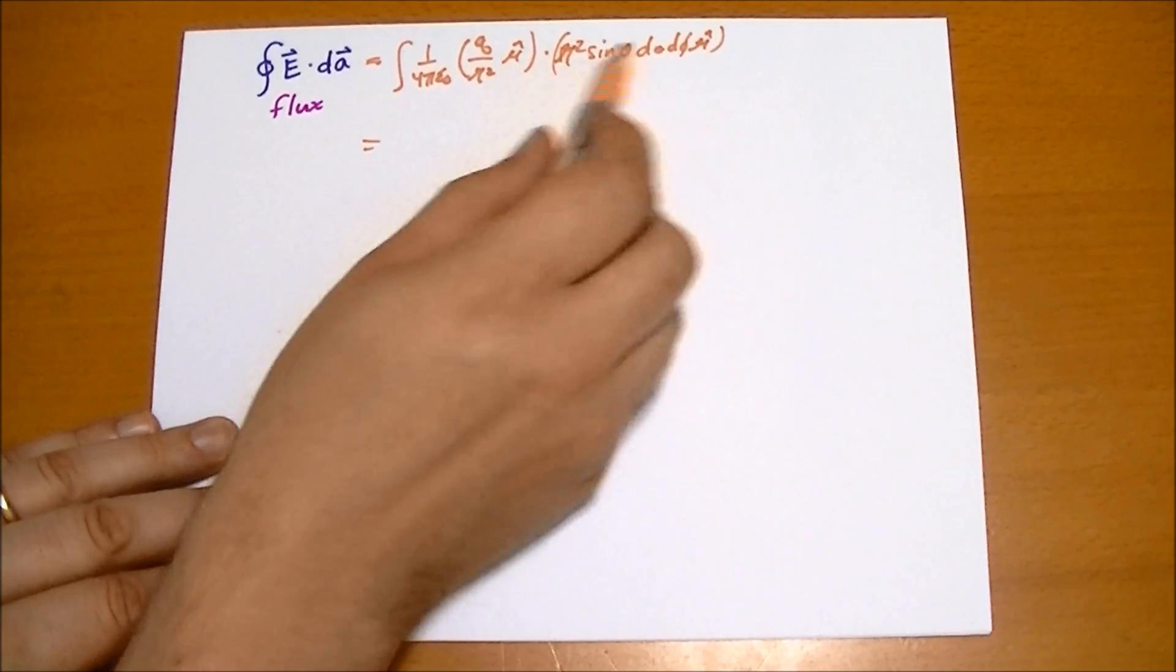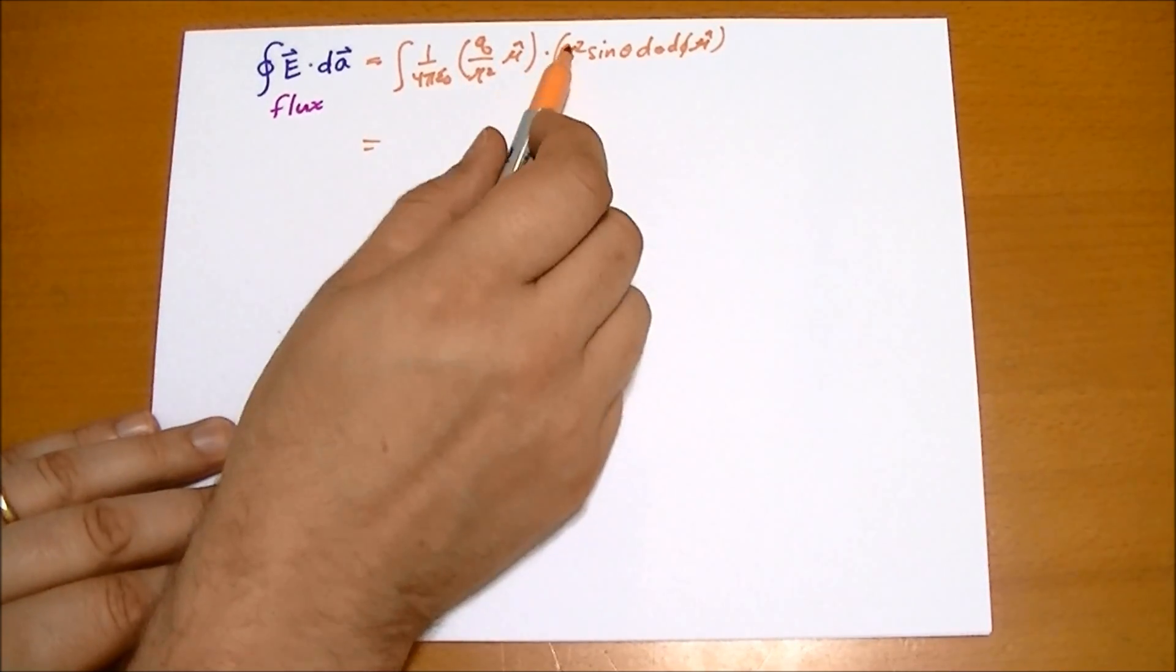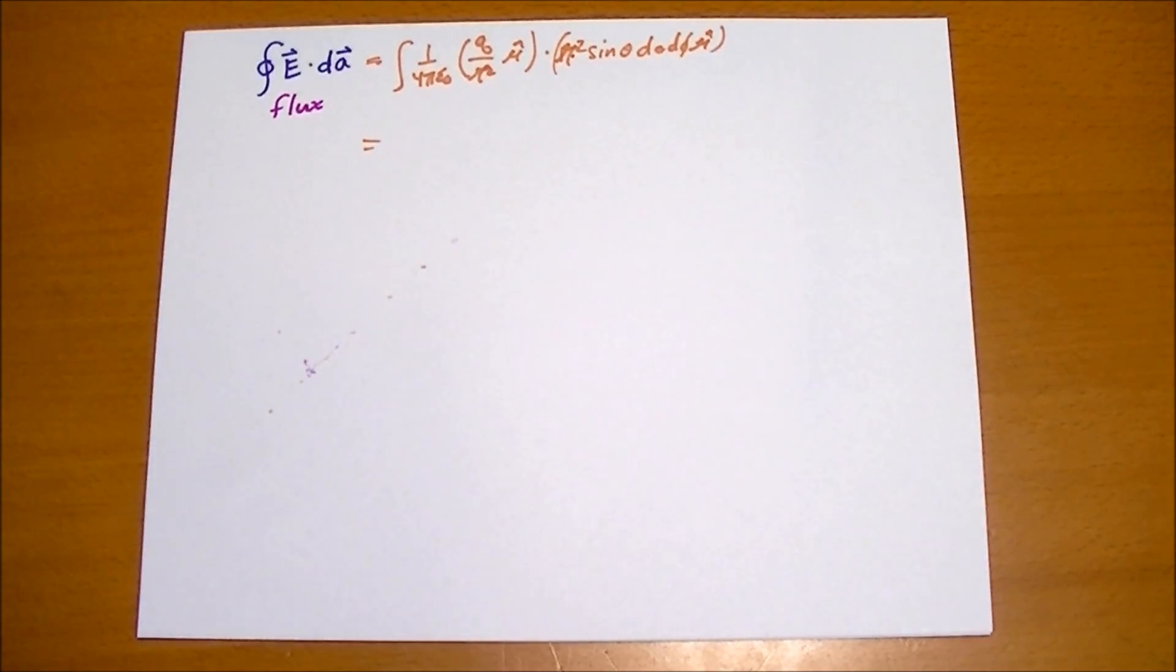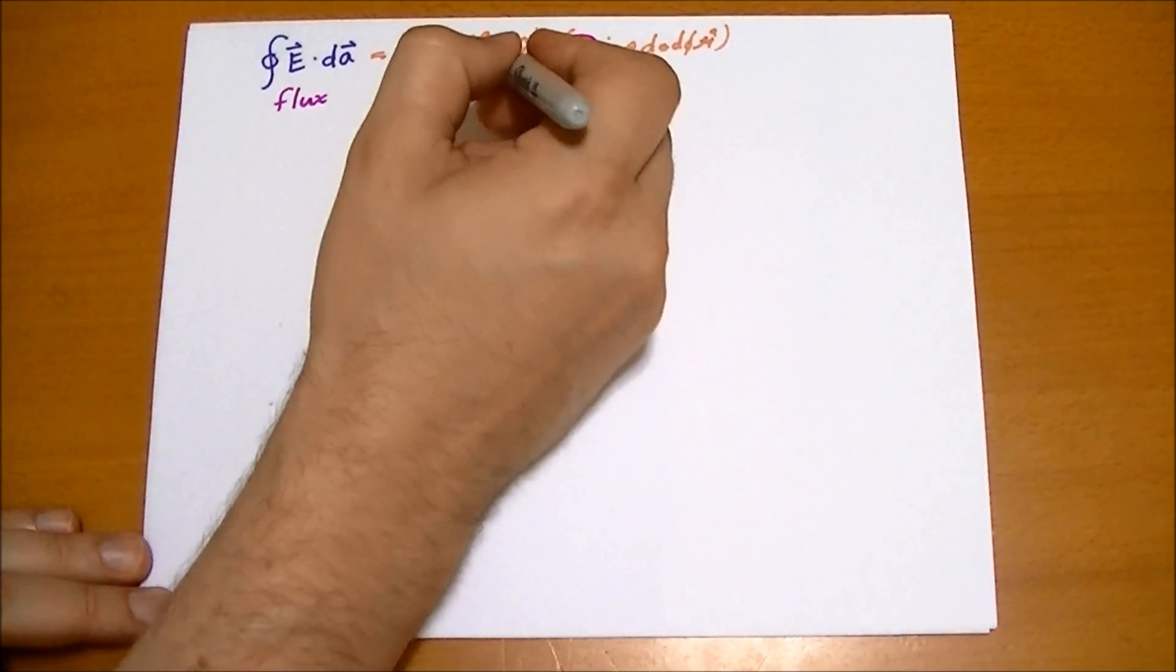So what happens is these two are multiplied together so you get q times this quantity, and these two r squared—I'm going to circle those so you can see those really well—this r squared and this r squared actually end up canceling each other.